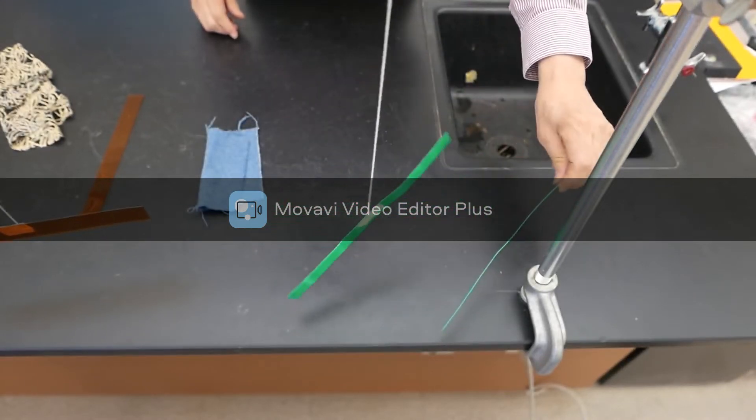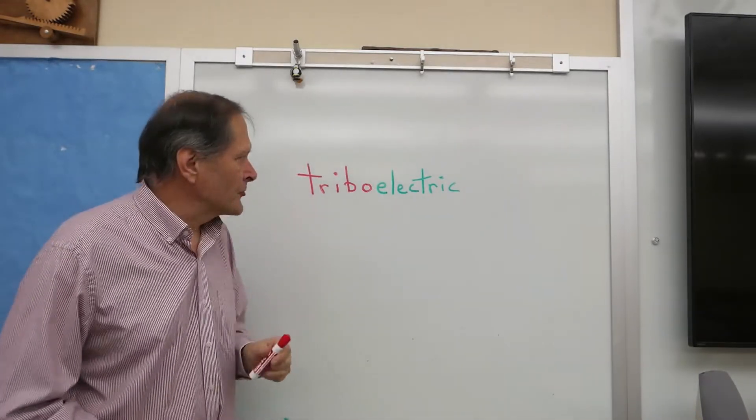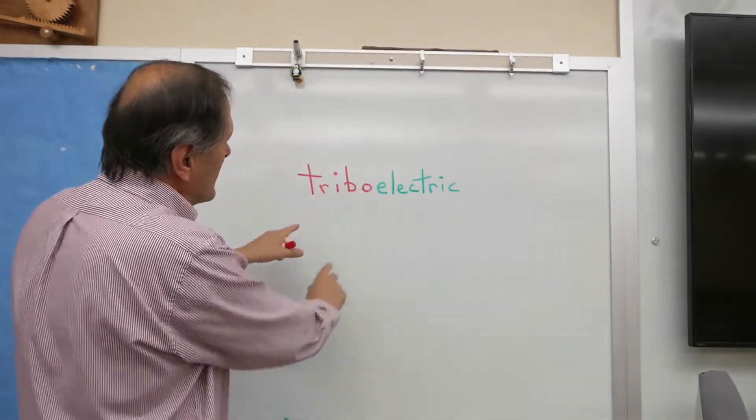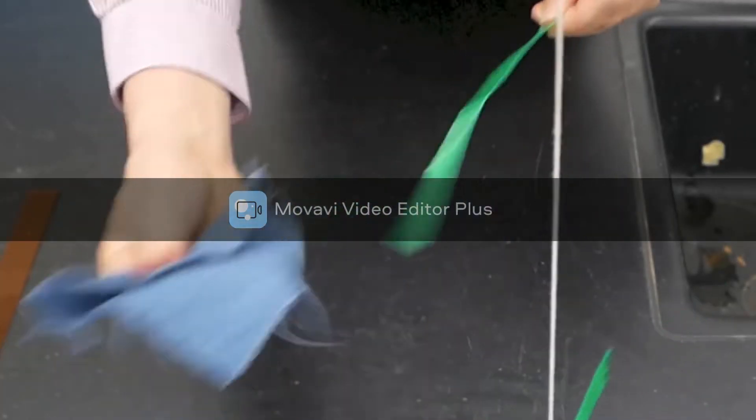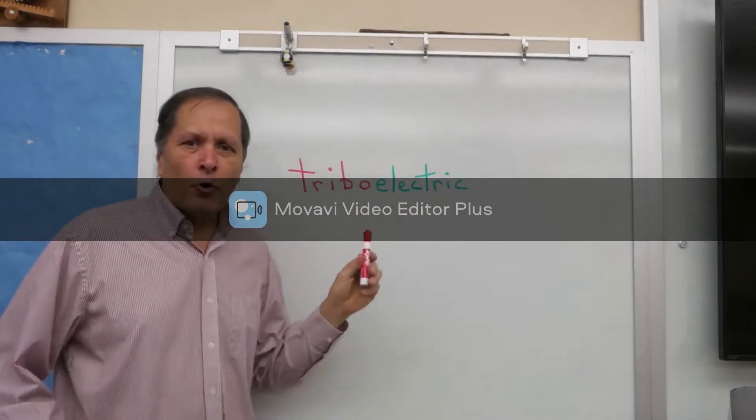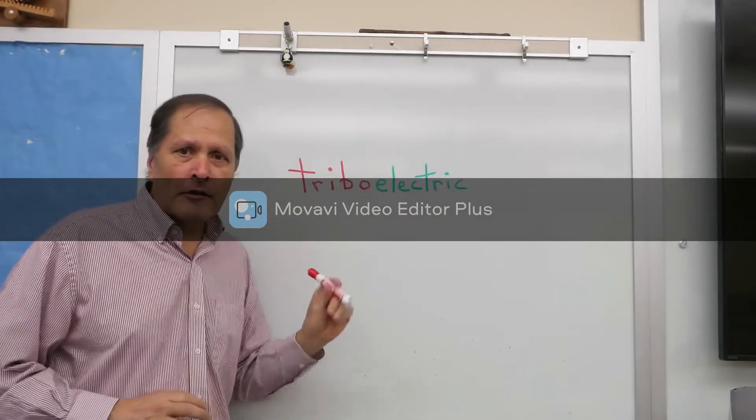Now, why is it doing this? The process we're looking at is sometimes referred to as friction charging. The word triboelectric—well, tribo comes from the Greek word meaning to rub. And electric, of course, refers to the positive and negative charges. But it's not really friction that's creating the charge.